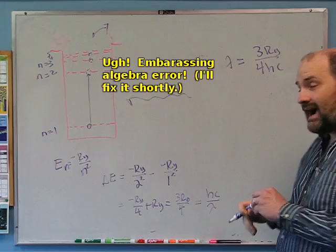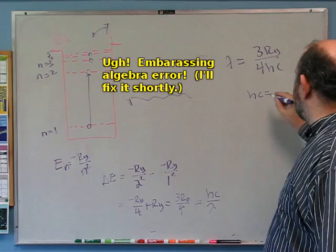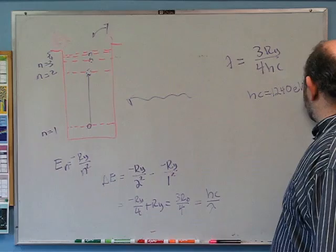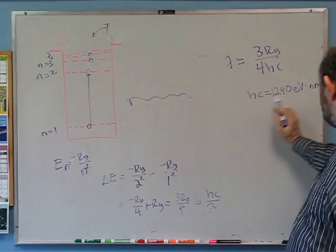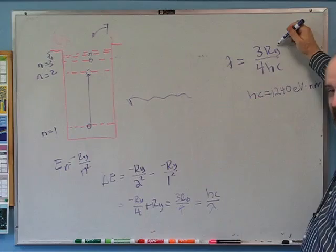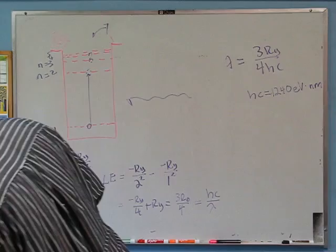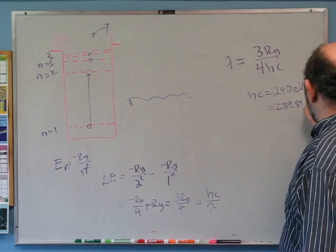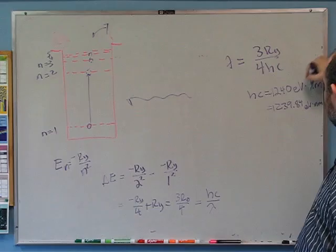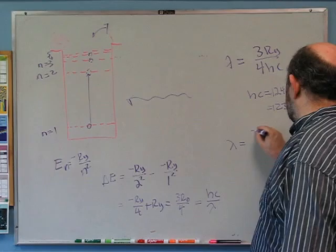So I need to solve for lambda. I get lambda equals 4hc over 3Ry — I did the algebra wrong at first but caught it by looking at my units. Now, a useful shortcut: h times c equals 1240 eV·nm. If you want more digits, it's 1239.84 eV·nm. This is convenient because it's in electron volts, which we tend to use for atoms, and nanometers, which we often use for wavelengths.